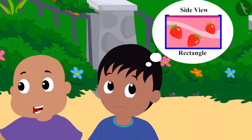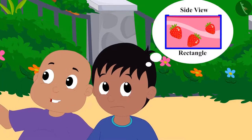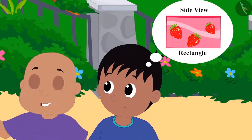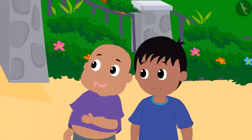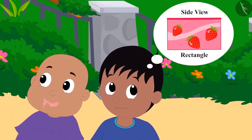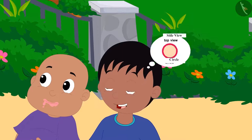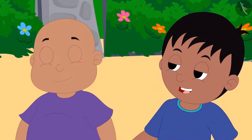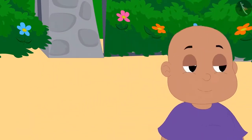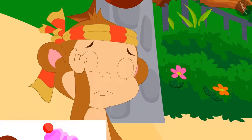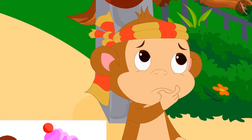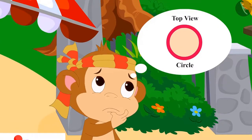Raju saw the cup from one side and to him it looked like a rectangle. Bablu ate the ice cream and Raju began to think about how Bablu made a fool of Babban. Bablu and Raju laughed and started walking home. Babban kept scratching his head and thought about how Raju and Bablu managed to fool him.